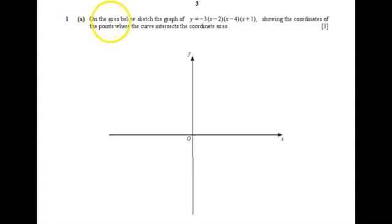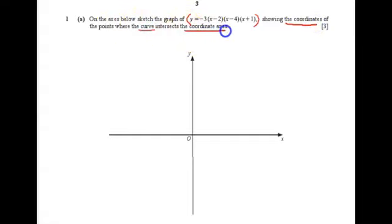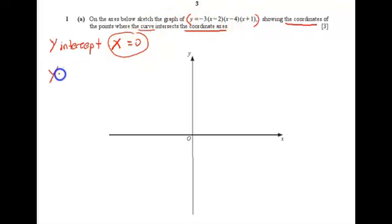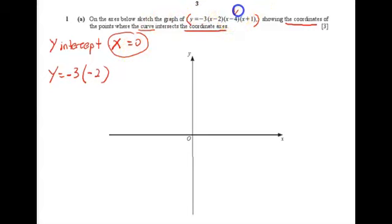Question 1: on the axis below, sketch the graph, showing the coordinates of the point where the curve intersects the coordinate axes. First of all, when you are looking at the y-axis, your x must be zero. Now let me substitute x equals zero into this equation — you'll be getting negative three, so when x is zero, you can plot that point.